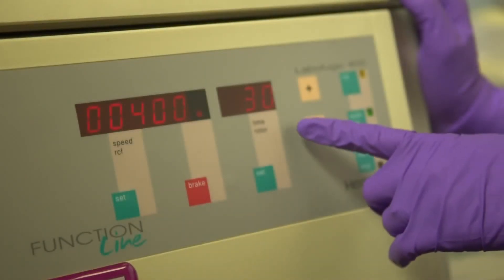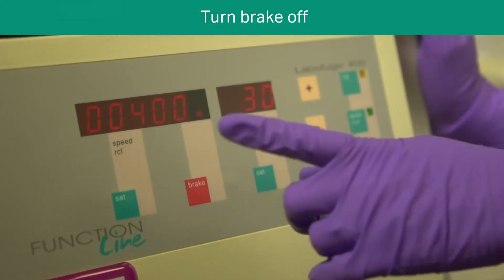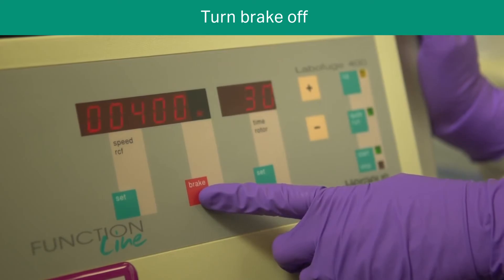Set the centrifuge to 400 g for 30 minutes at room temperature, remembering to turn the brake off.